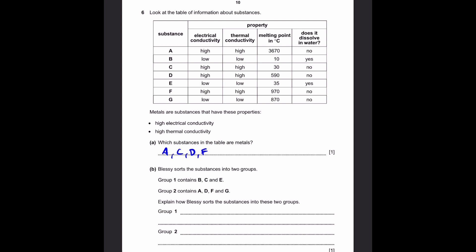Part B. Blessie sorts the substances into two groups. Group 1 contains B, C, and E. Group 2 contains A, D, F, and G. Explain how Blessie sorts the substances into these two groups. So if group 1 contains B, C, and E, which are the common factors? For all three of these, the melting point is quite low, or it's below human body temperature. But for group 2, it's A, D, F, and G, which all have very high melting points. So group 1 is low melting point, and group 2 is high melting point.